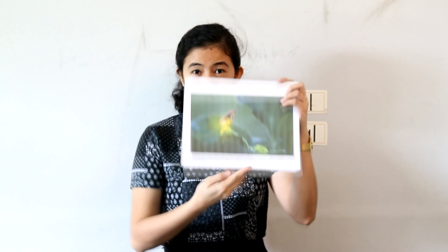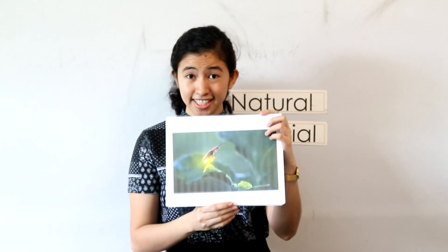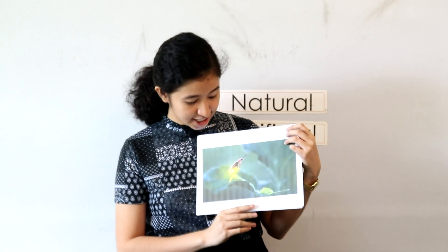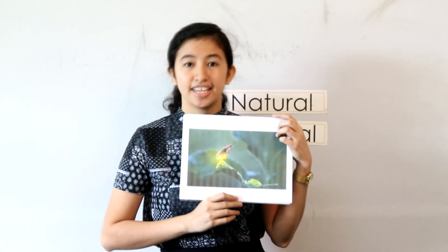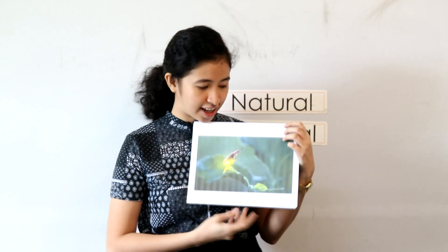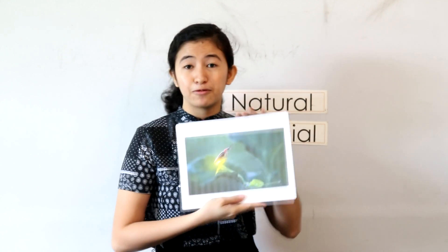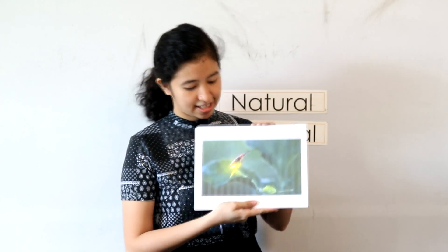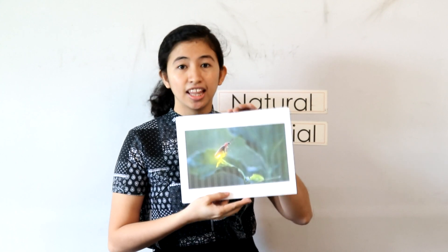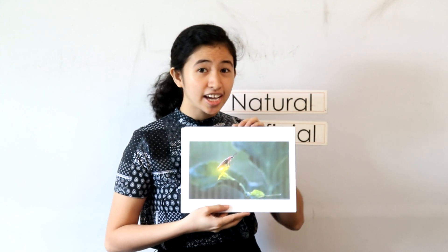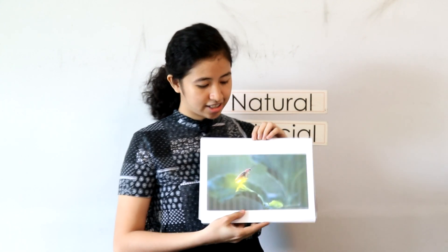Can you tell what this is? This is a firefly. A firefly is an insect. It has a natural light because it is made by God.